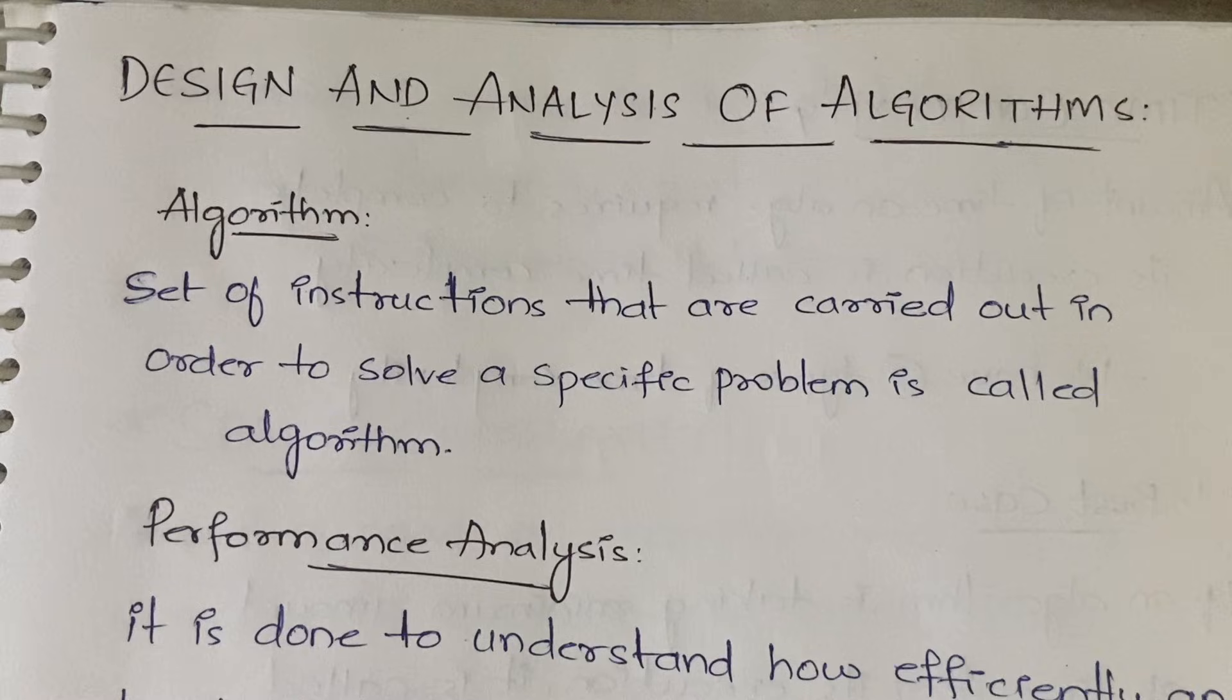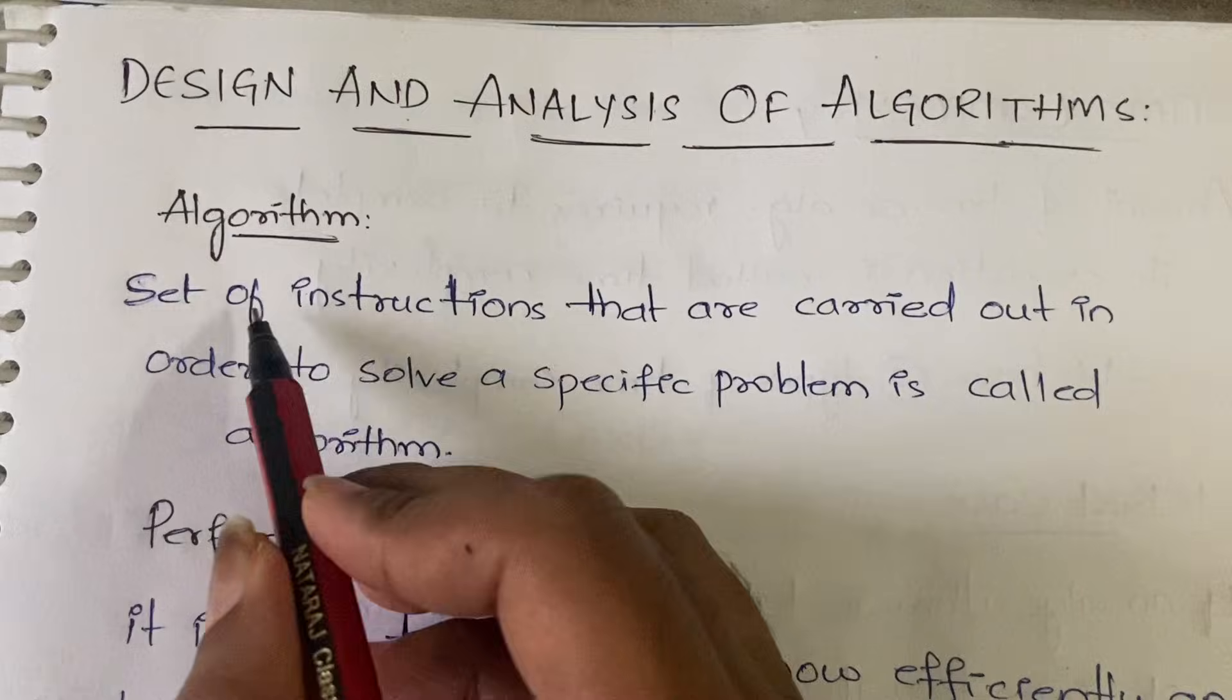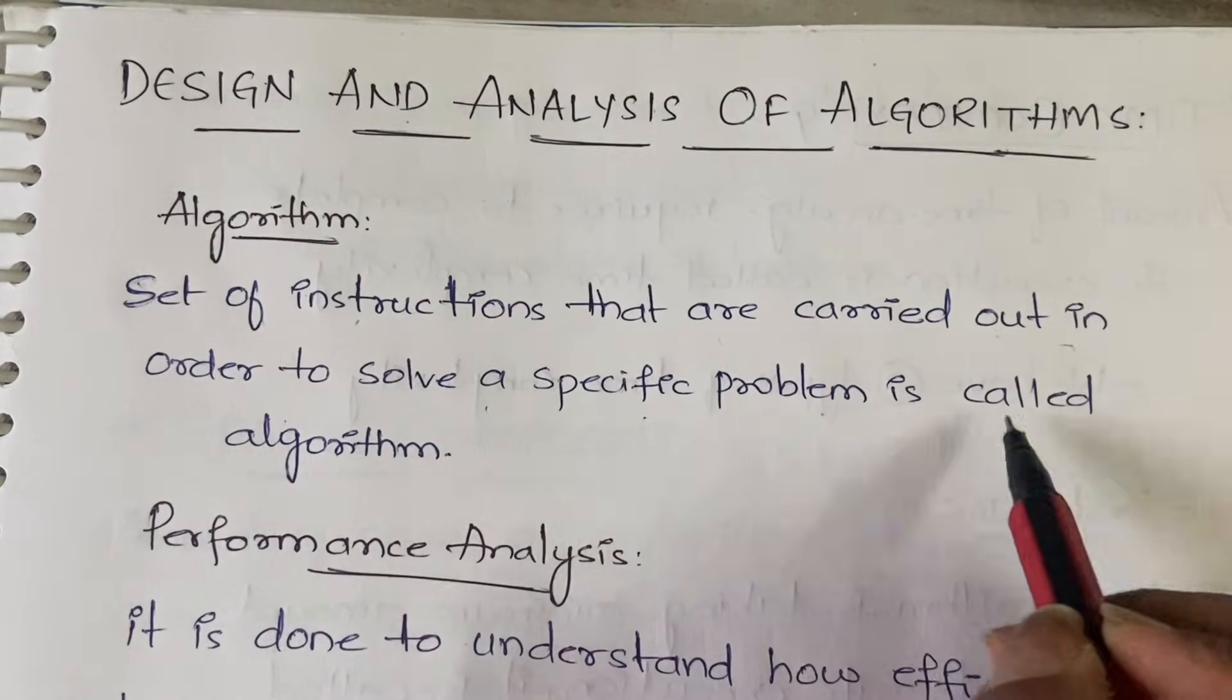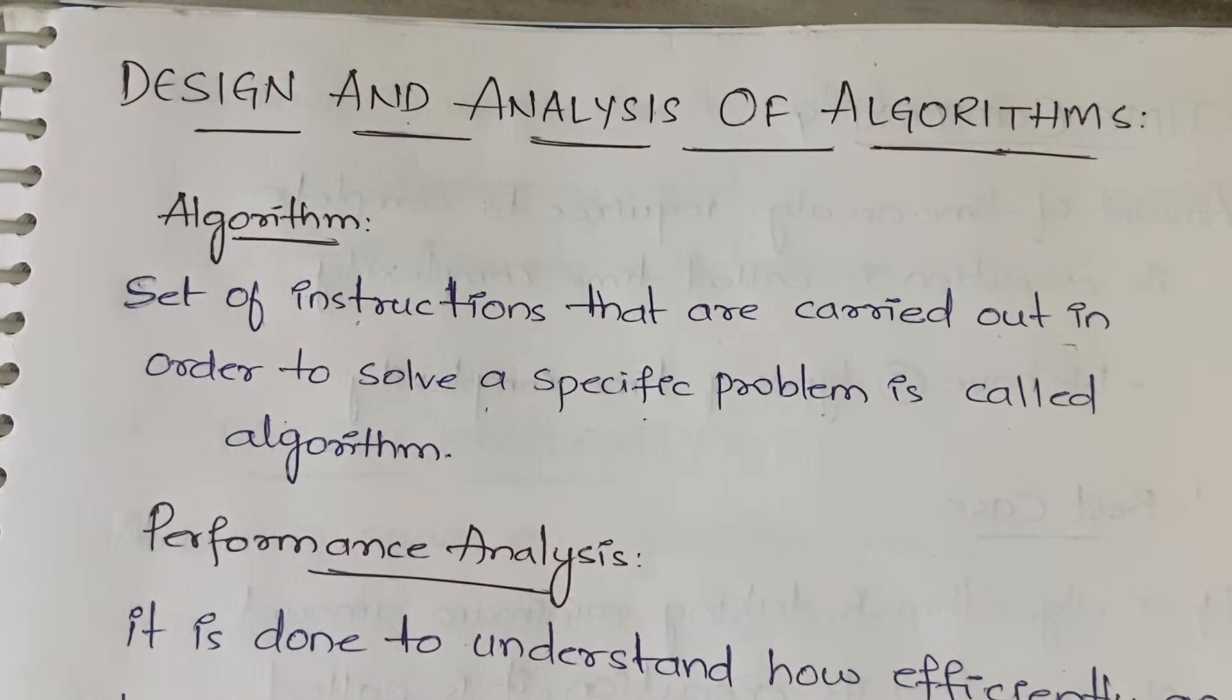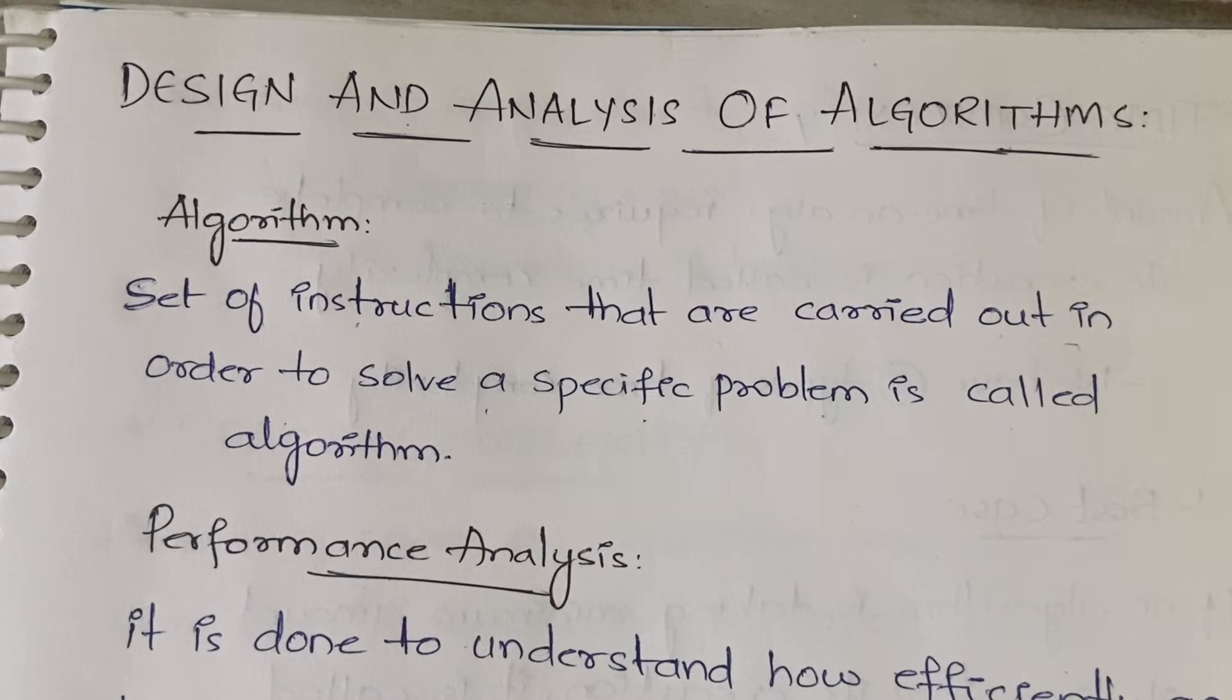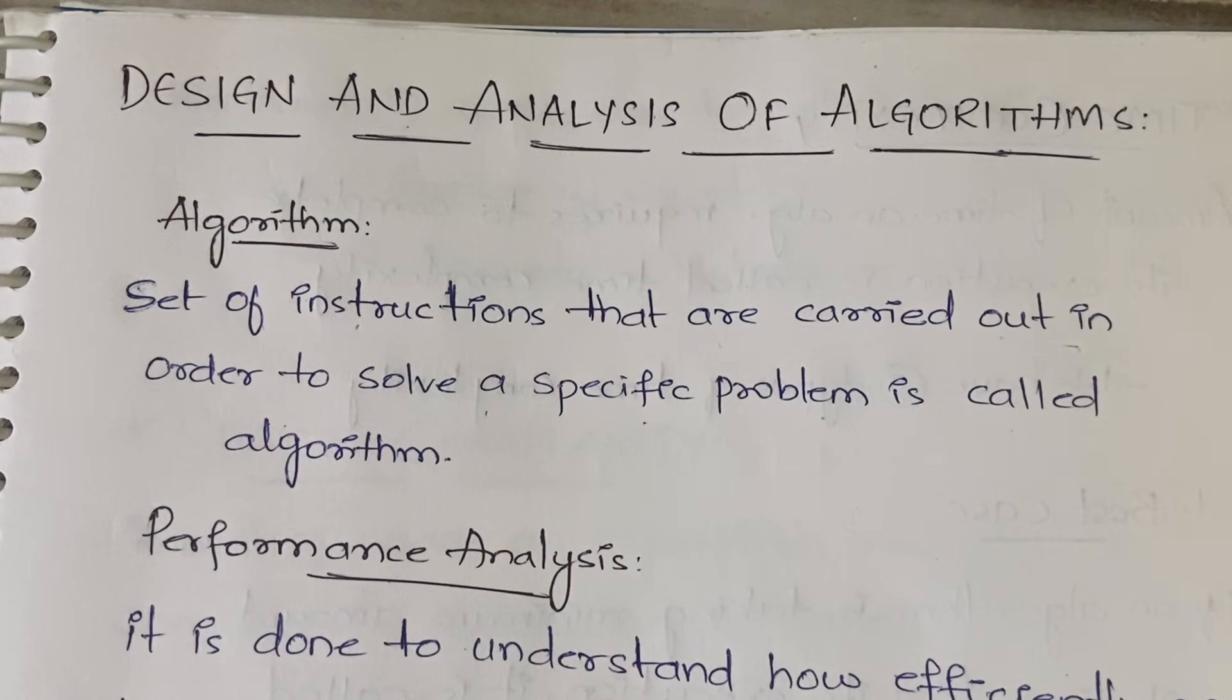First, let us understand what an algorithm is. Set of instructions that are carried out in order to solve a specific problem is called algorithm. For example, you want to prepare Maggie. What do you do? First you will go to shop, purchase a Maggie packet, come home, then turn on the stove, place a pan, pour some water, place the Maggie inside it.